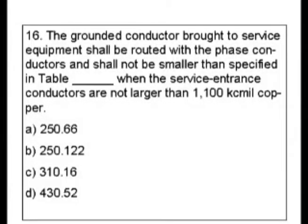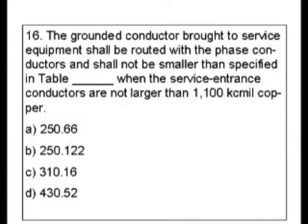Question 16. The grounded conductor brought to service equipment shall be routed with the phase conductors and shall not be smaller than specified in table blank, when the service entrance conductors are not larger than 1100 kcmil copper. We're given a bunch of numbers for the names of our tables.